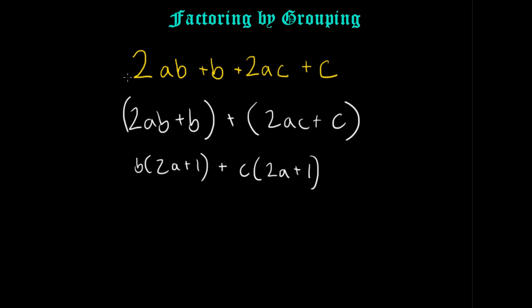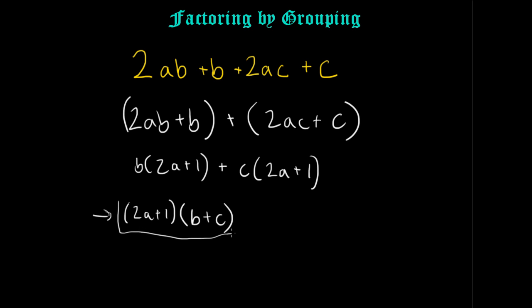This would have been very difficult to see from the original problem using the same strategy as the last video. So this video is about grouping first and then using the common factor ideas from the last video. We factor out the (2A plus 1), and what remains of the B and C gives us (B plus C). So the factored version is (2A plus 1)(B plus C).